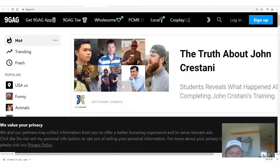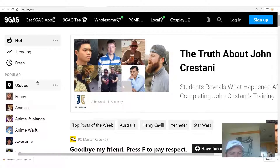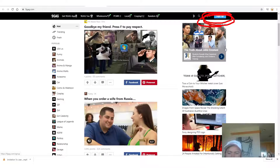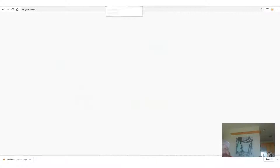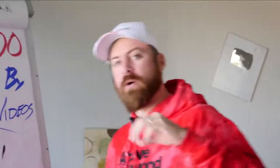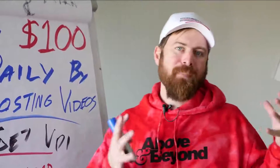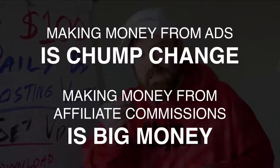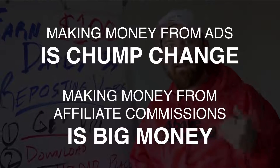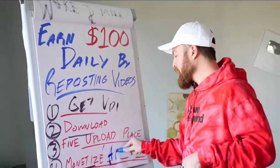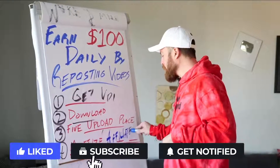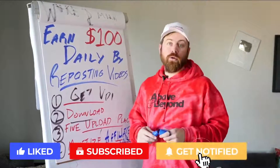Here's another site called 9gag — kind of like a viral video mini website. You can just upload videos here, sign up to get started. Last but not least, you can even re-upload my videos to YouTube. The thing about YouTube is because I was the first person to upload my own video, I end up making the AdSense revenue, but you end up making the affiliate commissions, which is what we're going to talk about next. The most important way of monetizing is actually not making money from the ads — making money from ads is chump change, whereas affiliate commissions is big money.